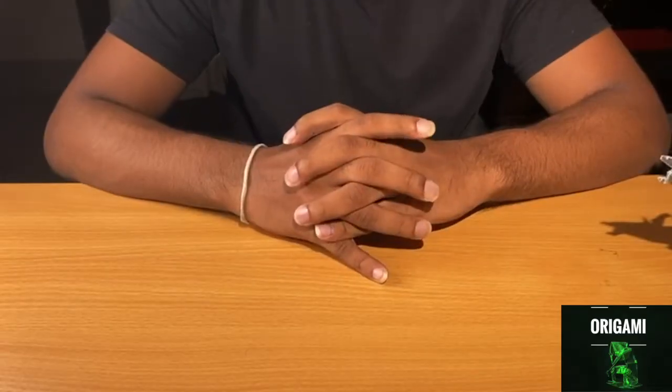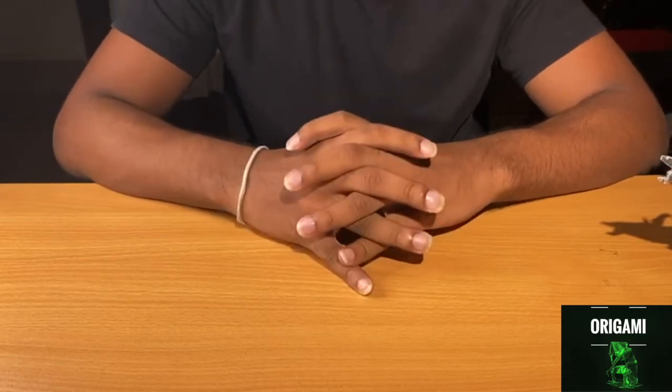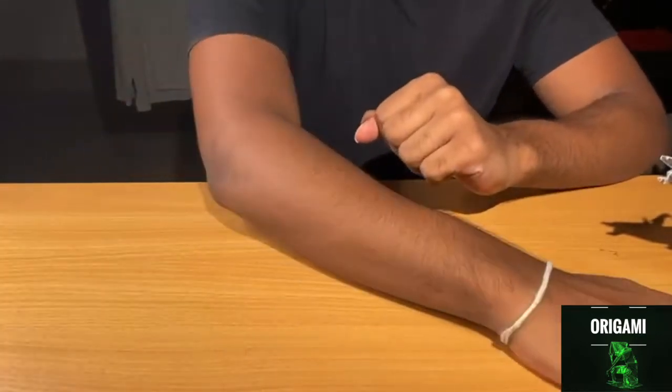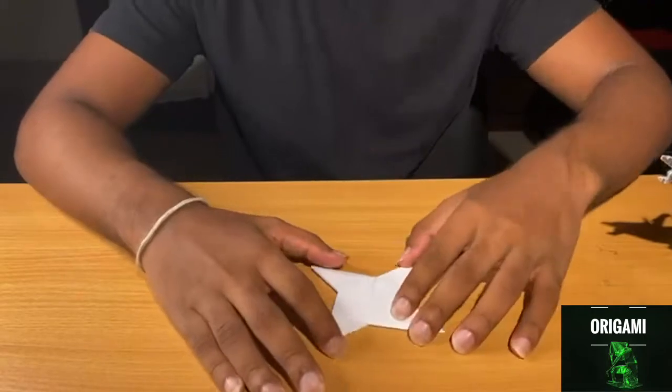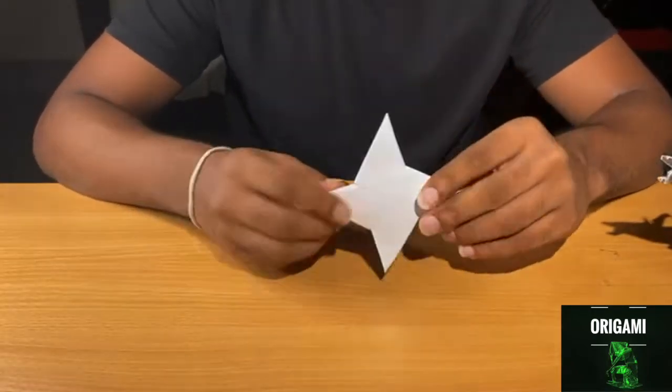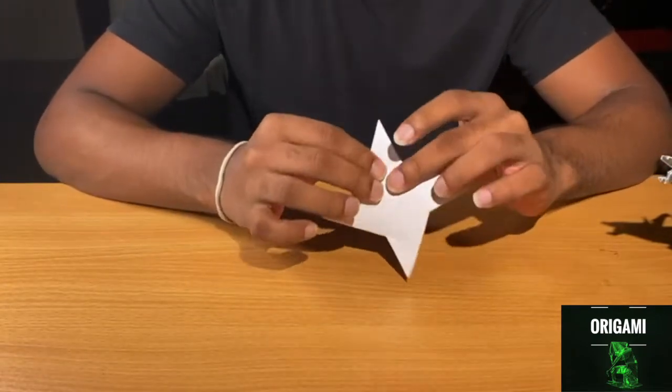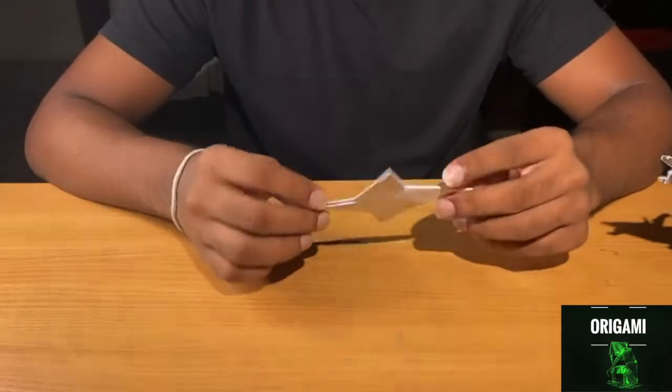Let's get right to it. So let's start with some of the easier models. Over here I have a typical origami ninja star. As you can see, it's a pretty easy model. Let me get you a better view of it.